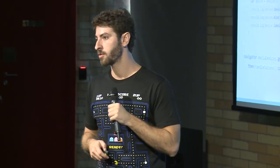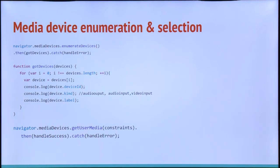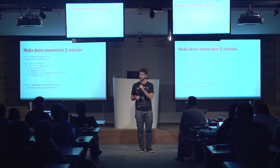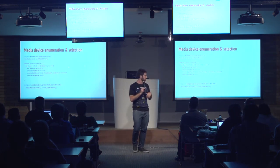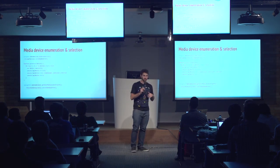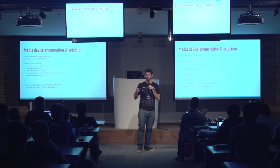What if you have more than one camera or microphone? Is there a way to choose what device to use? The answer is yes, by using the enumerateDevices API, which returns an array of devices connected to your computer. We can choose a specific device by specifying the device ID in the constraints — you can set the audio source or the video source.